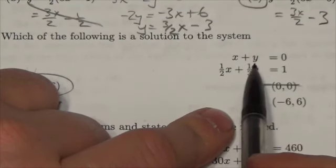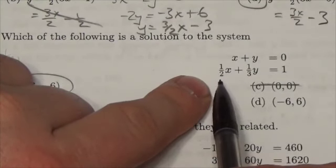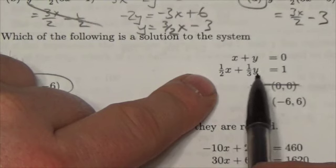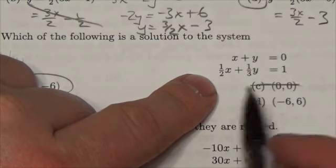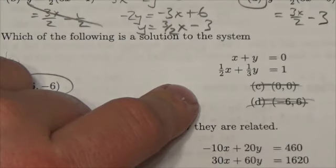Negative 6 plus 6 is 0, but a half of negative 6 is negative 3. A third of positive 6 is 2, and negative 3 and 2 is going to be negative 1, not positive 1, so it's not this one.